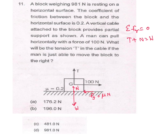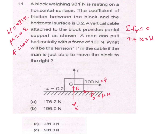W is given as 981 N, Mu is 0.2 (coefficient of friction), and the horizontal force F is 100 N acting towards the right. This gives us equation 1: T plus N equal to 981 N.